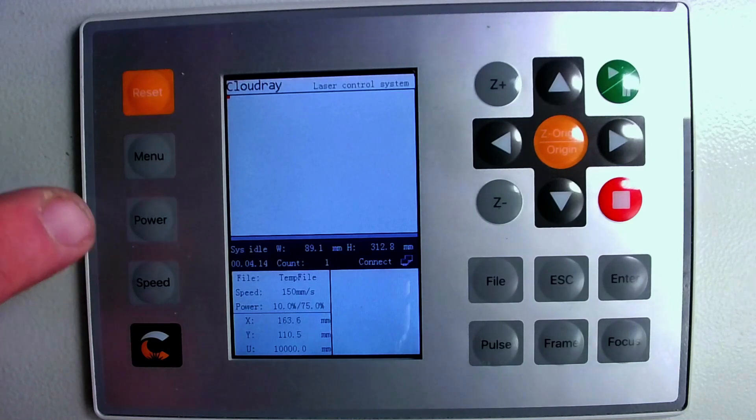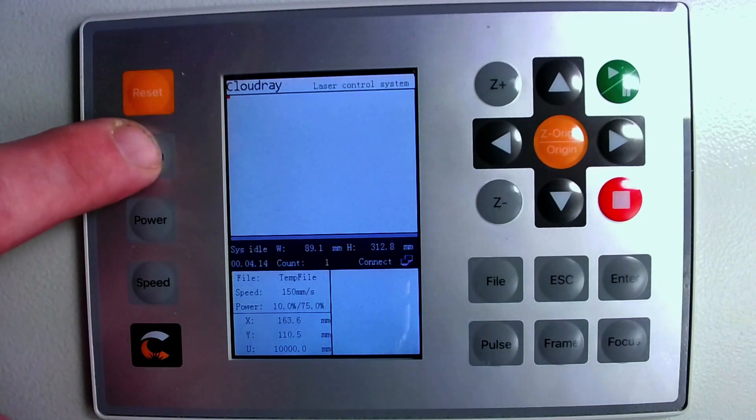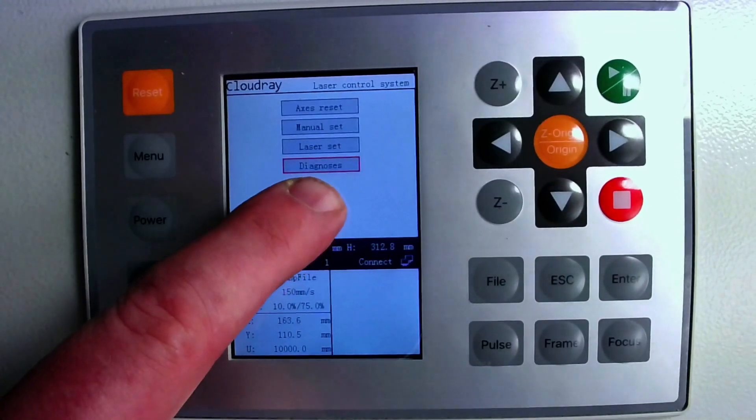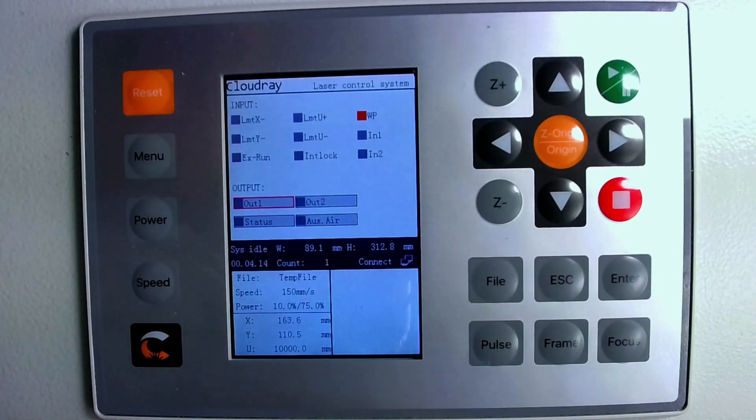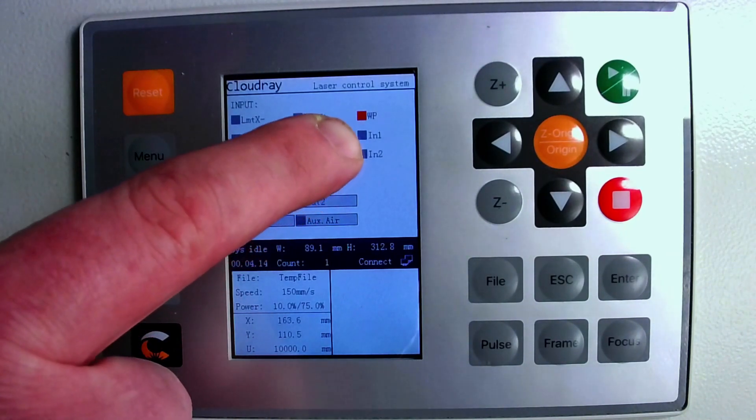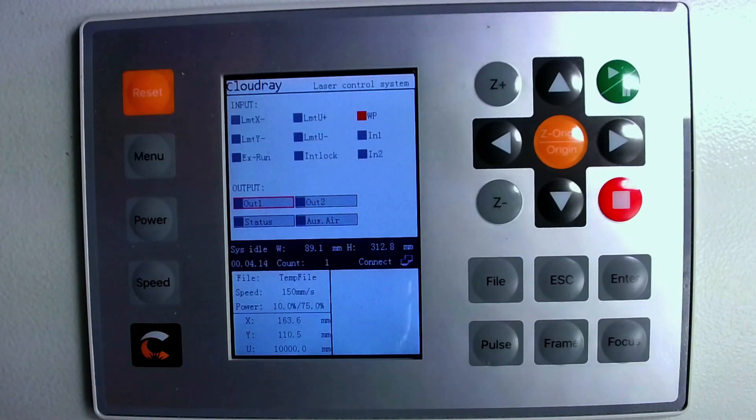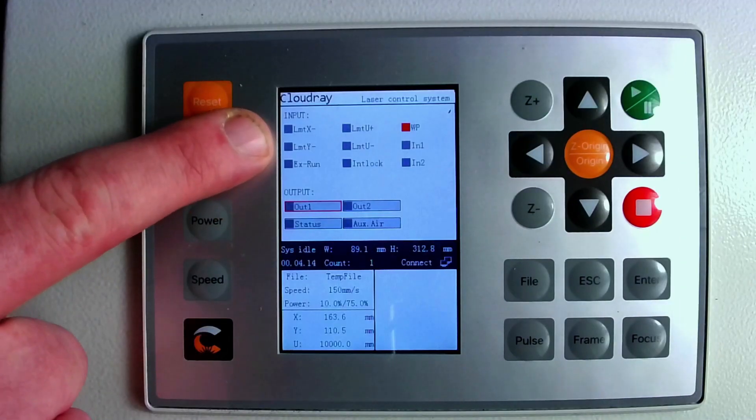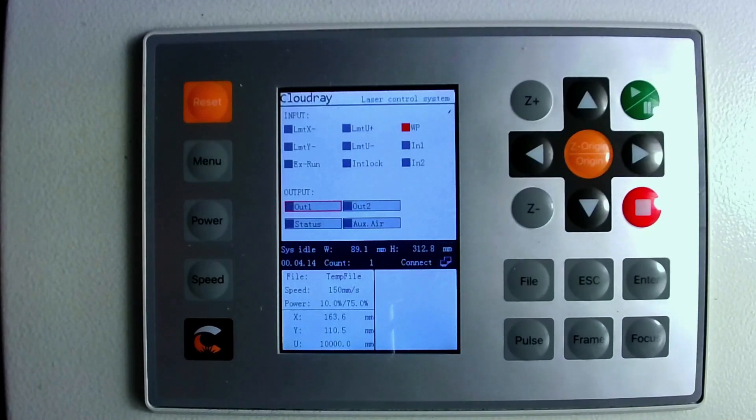To test all the limit switches and safety switches such as your water protect and your X and Y axis, we can go into the menu, go across to function set press enter and go up once to diagnosis, press enter. We can see here that we have a red light on WP which is water protect and that's because the water is not running. So we'll now turn on the water and watch that this light actually turns off which means it's functioning correctly. And if you have a proximity sensor then what you'll need to do is use a metal screwdriver or something similar to tap onto the proximity sensor to see if these illuminate.